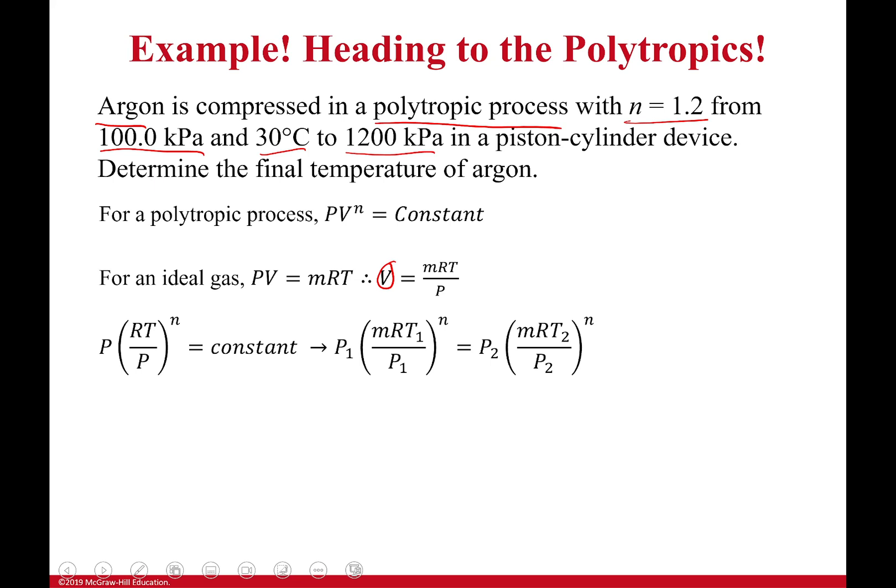So what we can get then is that my pressure times this constant is going to be constant. Pressure times this is going to be equal to a constant. Okay, so I have it at the beginning. I have it at the end. Now, let me look at this right here. We know our temperature initially. We know our pressure initially. We don't know our mass though. Our mass though. How are we going to solve for that? We don't have to worry about it. You know why? Because it's on both sides of the equation. So this cancels out. This cancels out. And so what we're left with is this equation right here.